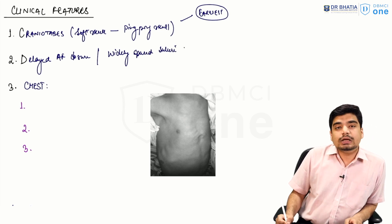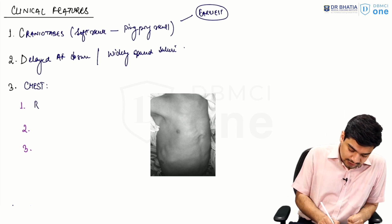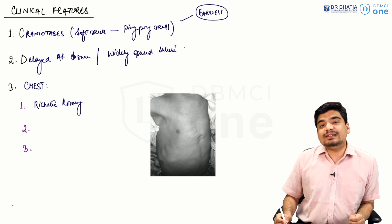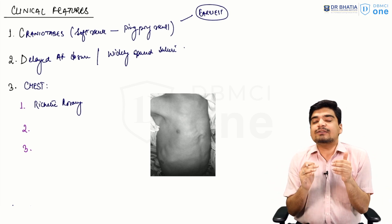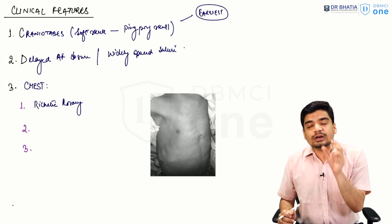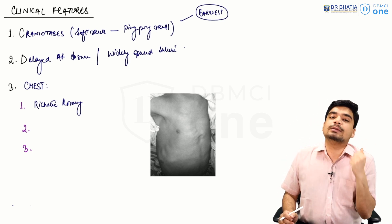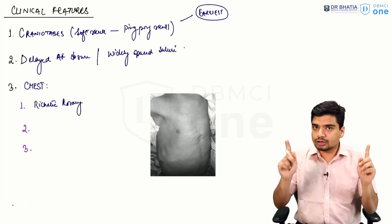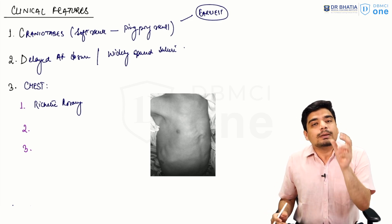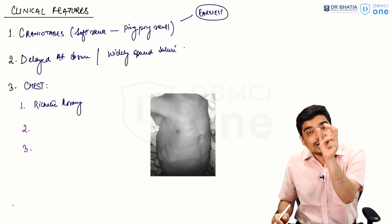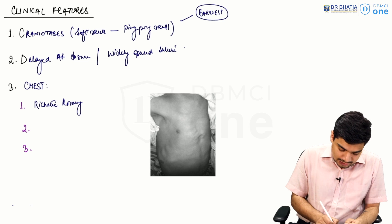When defective mineralization occurs in the chest at the ribs, three things happen. The first is the ricketic rosary — bead-like formations on the ribs at the costochondral junction. Normally that cartilage gets calcified when vitamin D and calcium are present, but in deficiency the cartilage does not get mineralized, it expands, and that expansion produces the bead-like formation called the ricketic rosary.